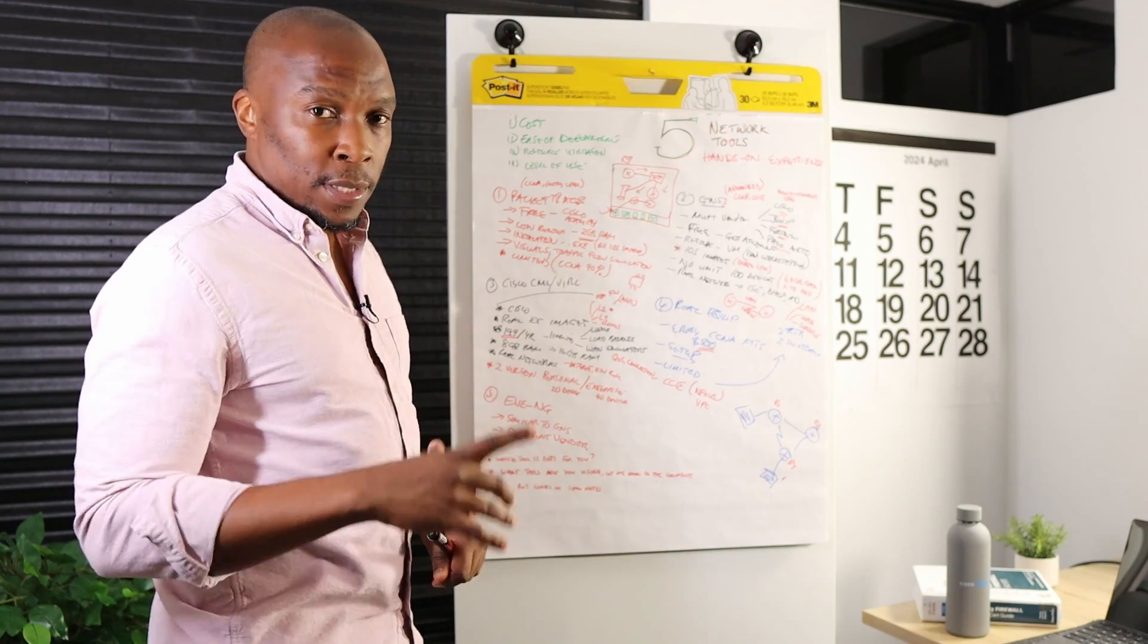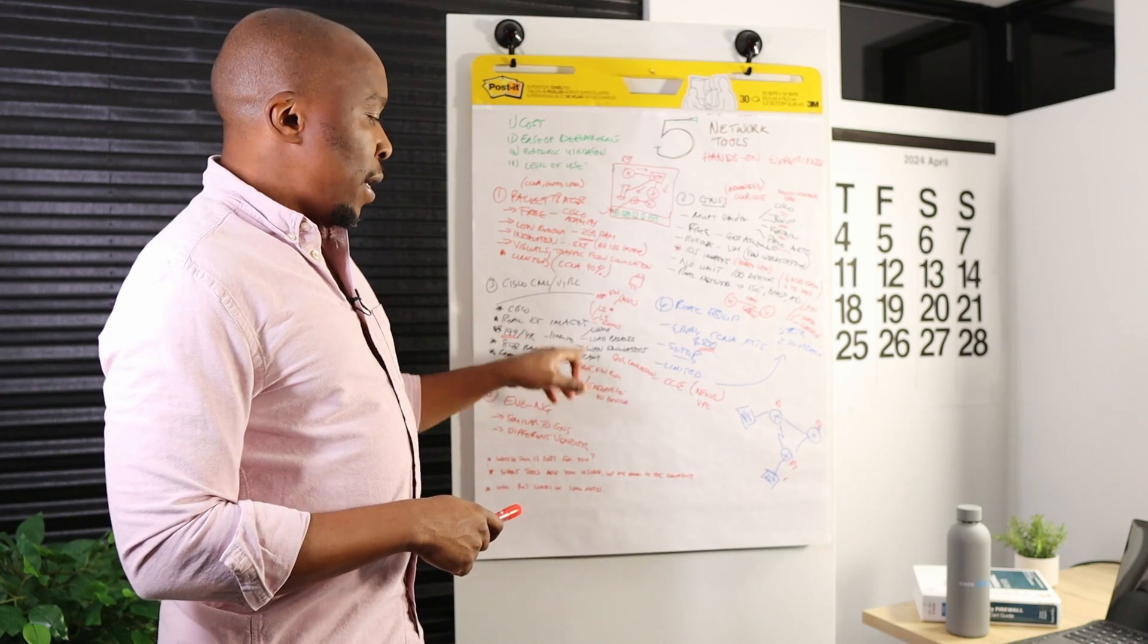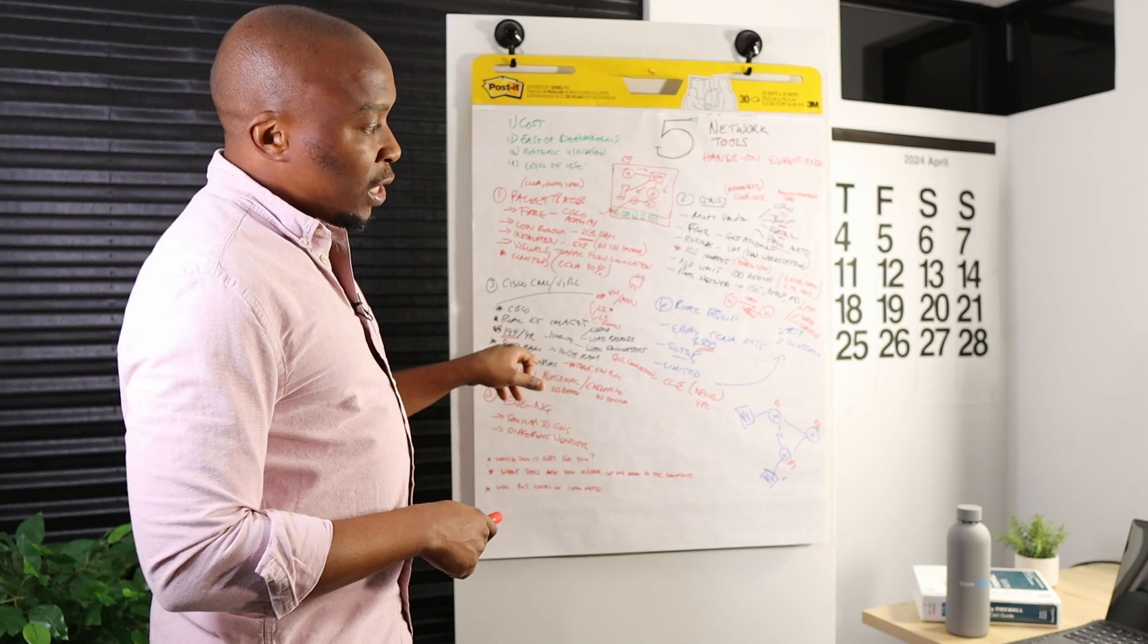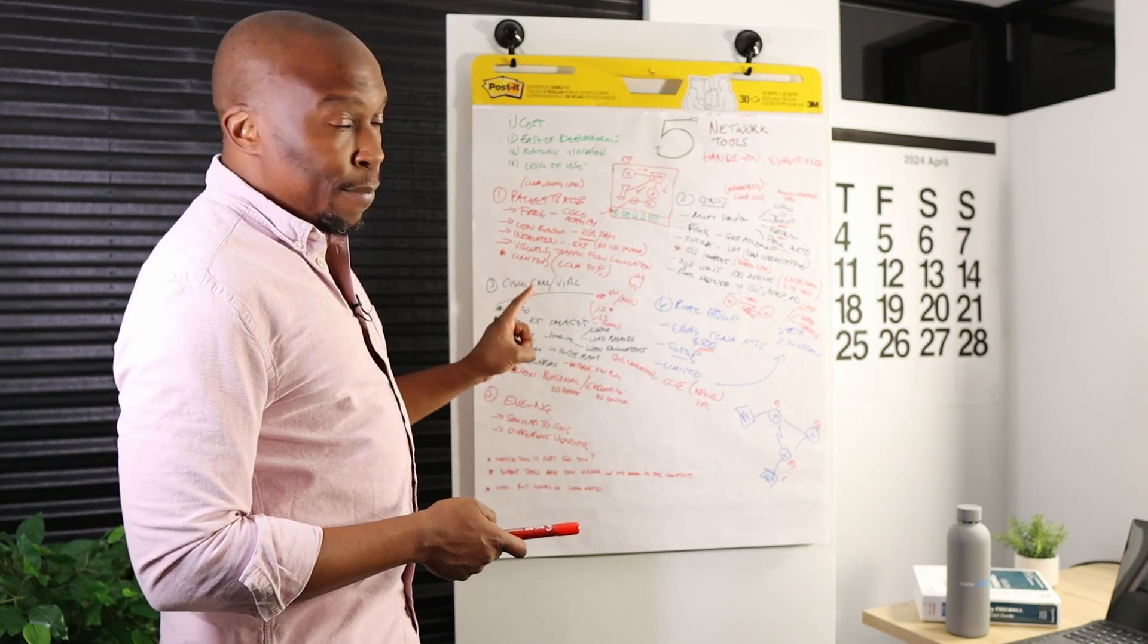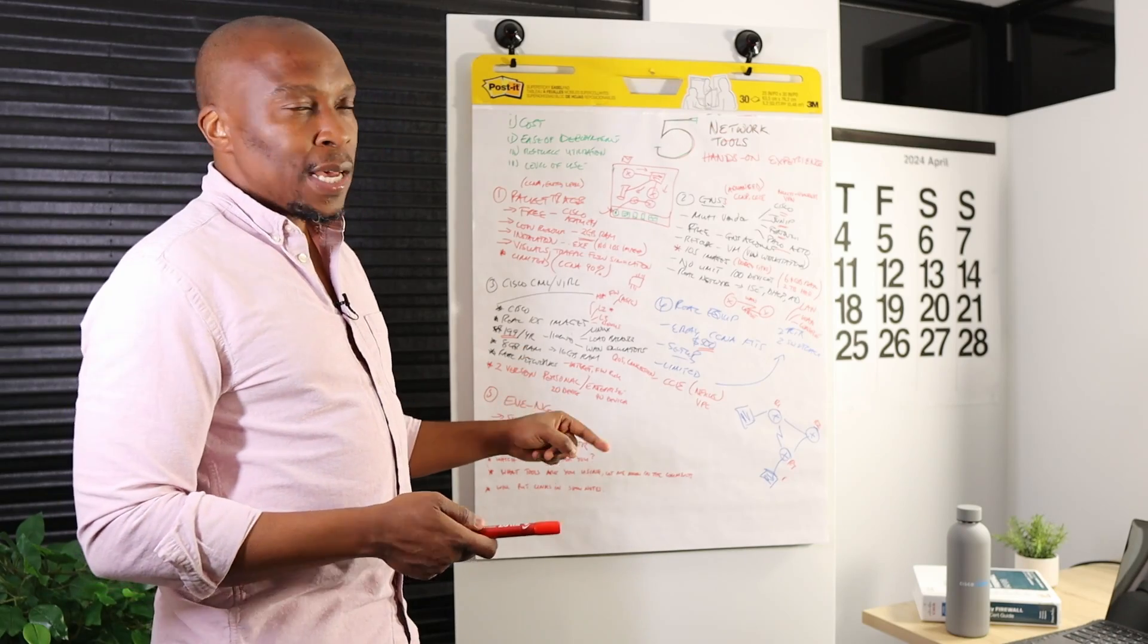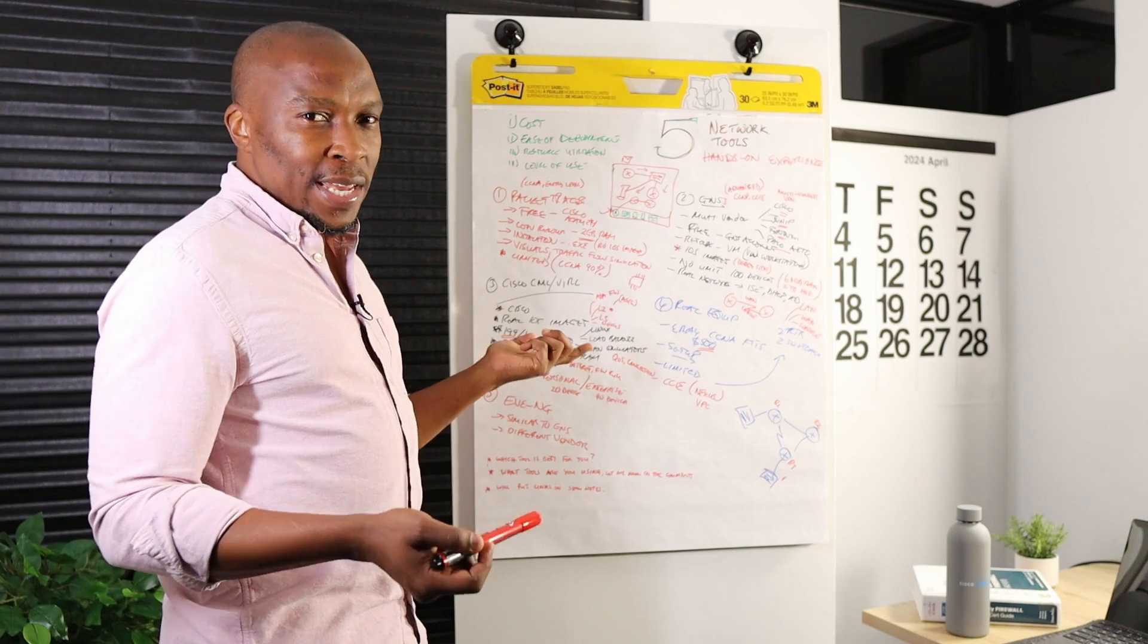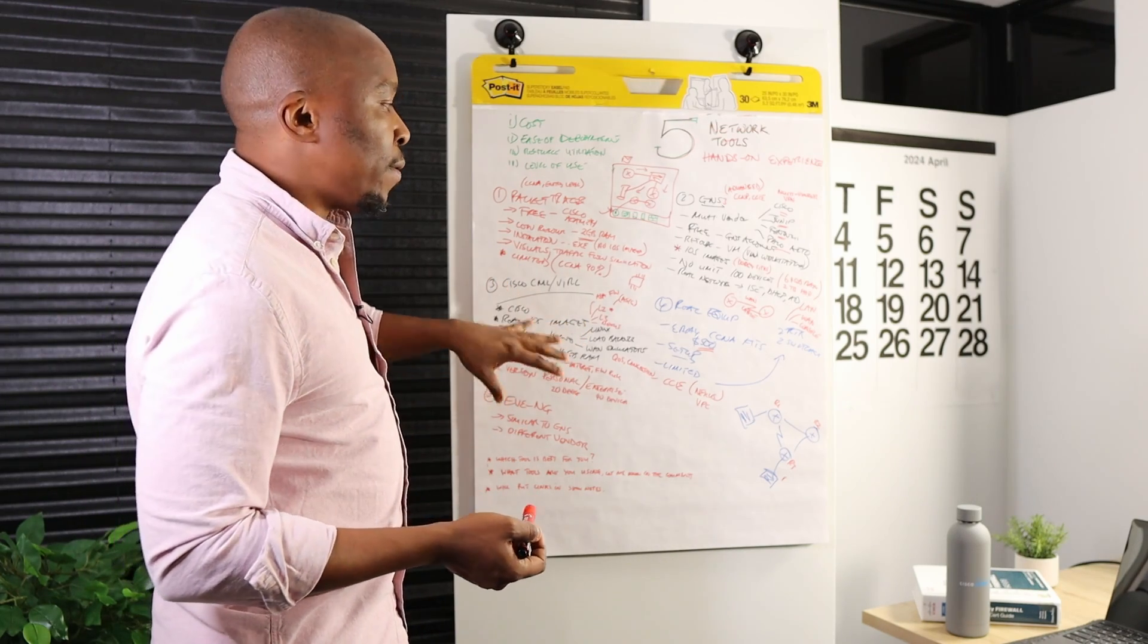There are two versions that come with CML. There is the personal version which limits you to 20 devices. And then you've got the enterprise one that limits you to about 40 devices. So depending on the size of the lab that you want to build, if you want to build a lab with more than 40 devices, then GNS3 is your best bet. But if you're looking for something less than 20 devices, I've never built a lab that needs 20 devices to be running at the same time. So if you're looking for less than 20, then you can go with Cisco CML.